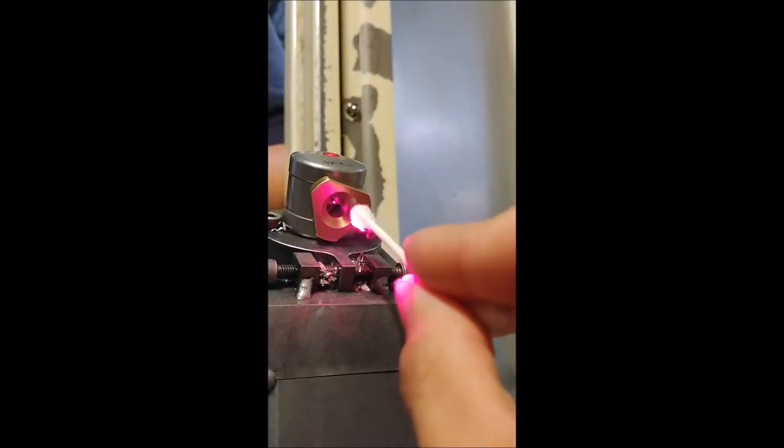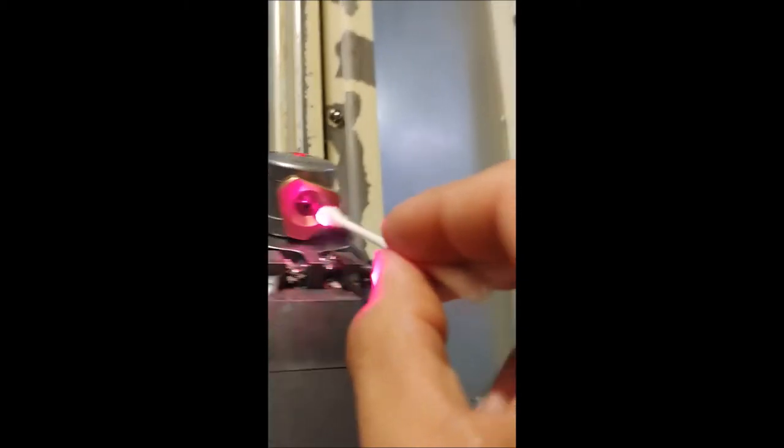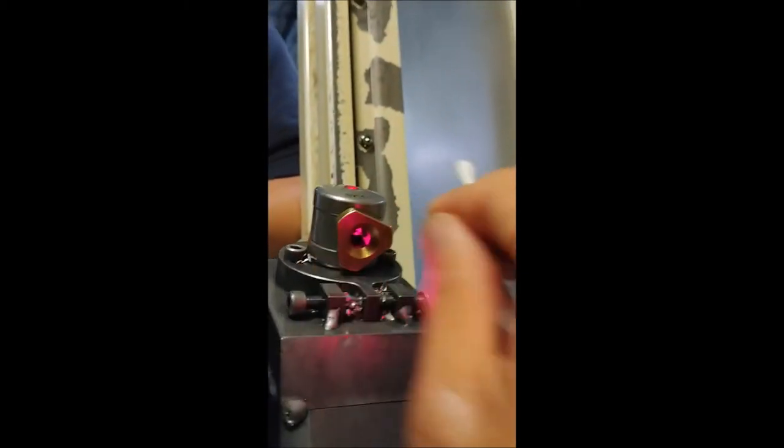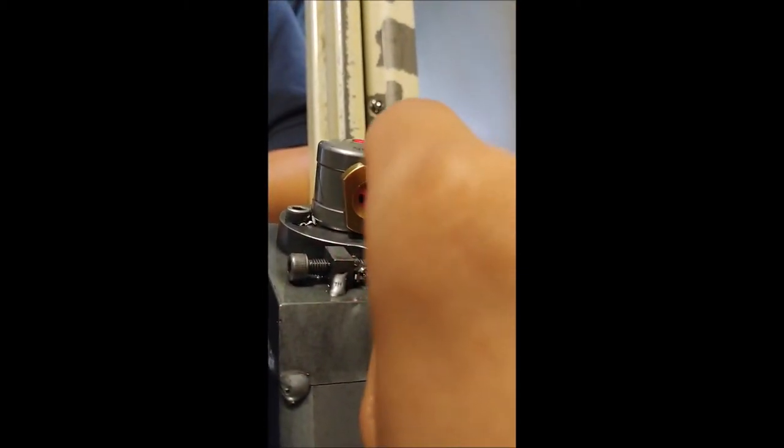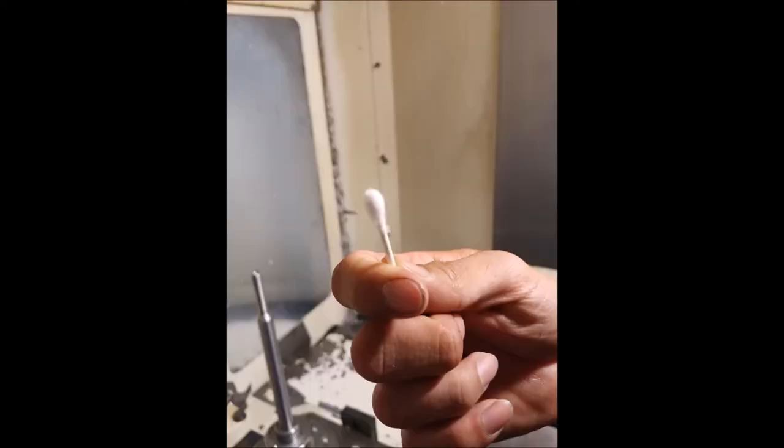Using a q-tip or the supplied Renishaw cotton swabs, gently clean the lens by inserting the swab and rotating back and forth slowly. Inspect the swab. If it is visibly dirty, clean the lens again with a clean swab. Repeat this process until the swab comes out clean.